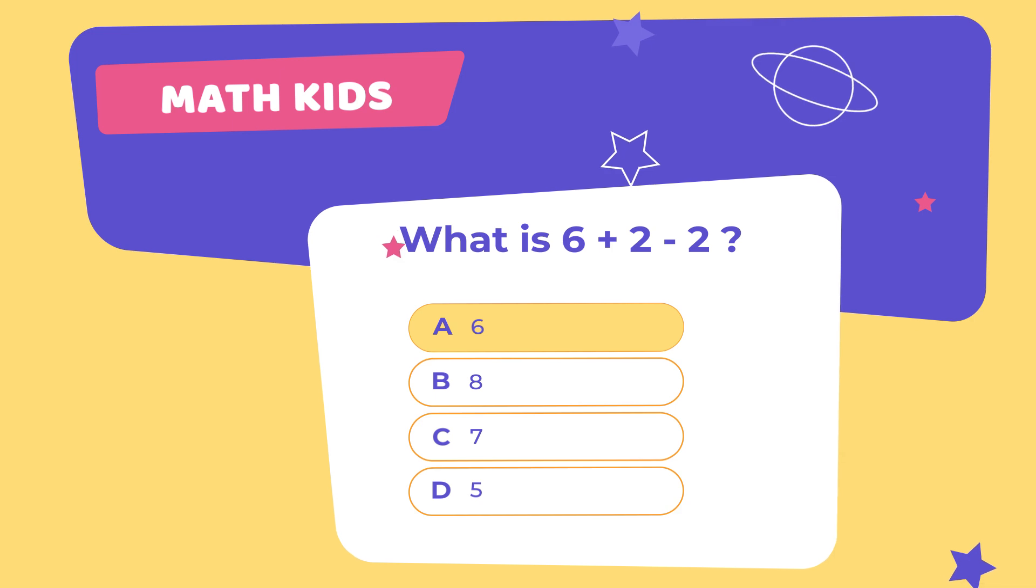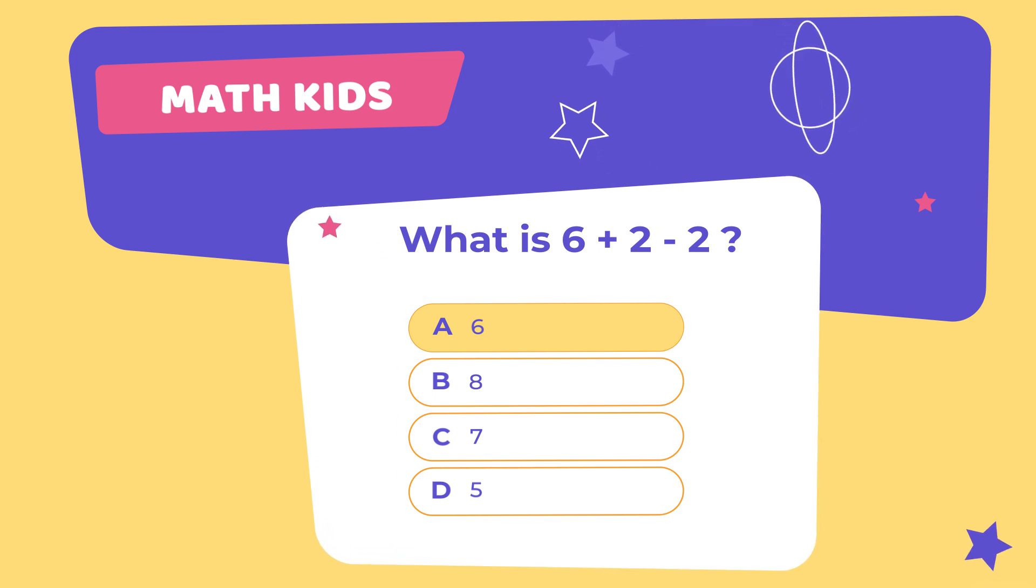You're right! Your answer is correct! Tom starts with 6 stars. Then, he finds 2 more stars, which means he has 8 stars now. But Tom gives 2 stars to his friend. So, how many stars does Tom have left? Let's count together. 1, 2, 3, 4, 5, 6. Yes! Tom has 6 stars left.